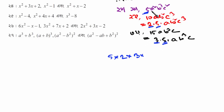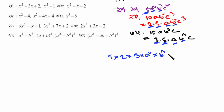So A squared is equal to A squared. B cubed, B squared, B cubed — the highest power is B cubed. C squared, C cubed, C — the total highest power is equal to C cubed.